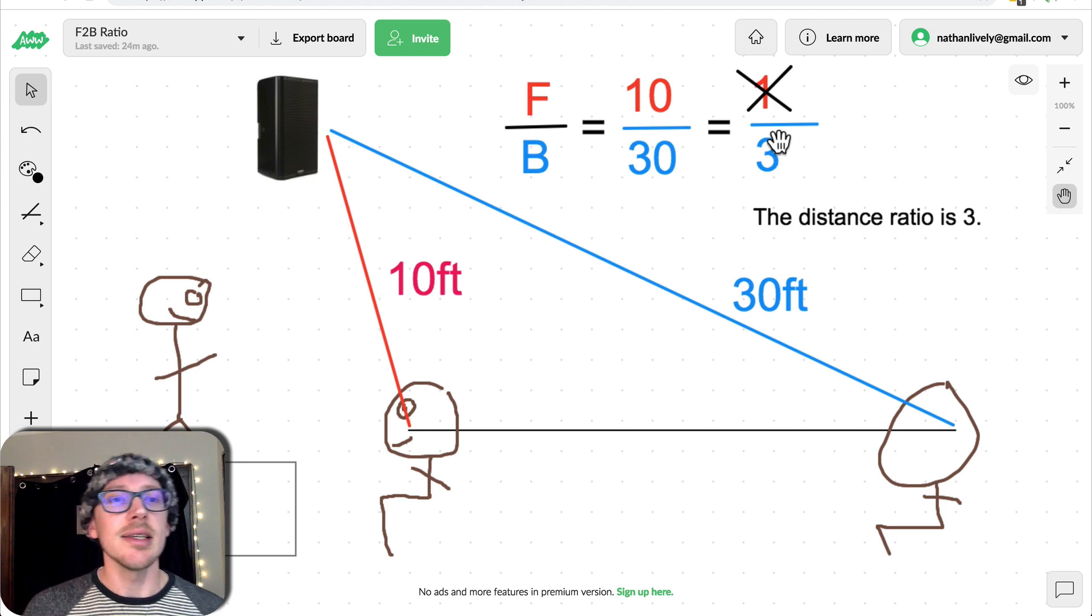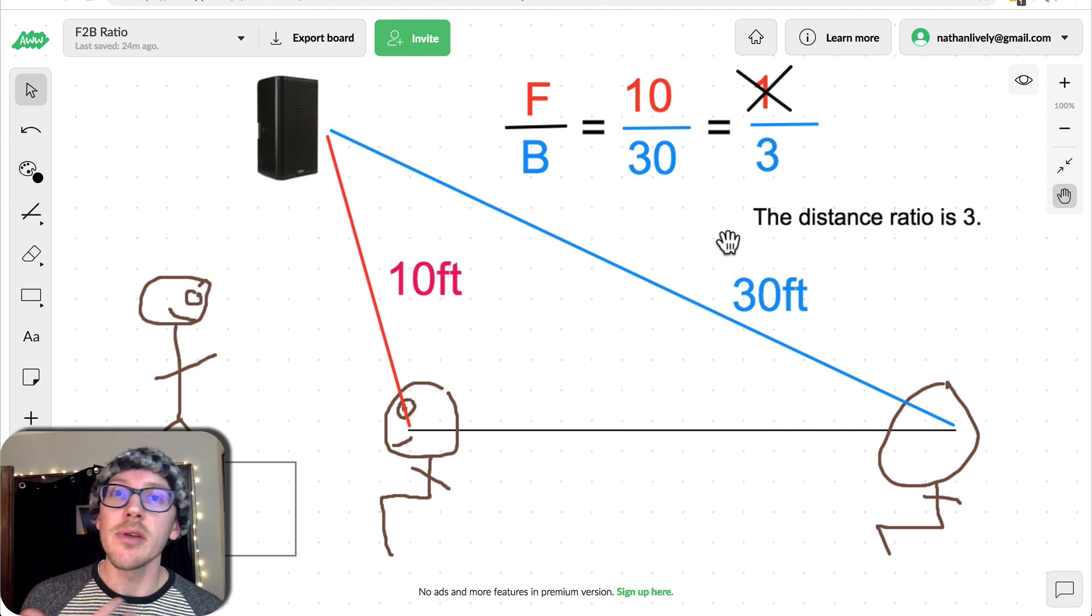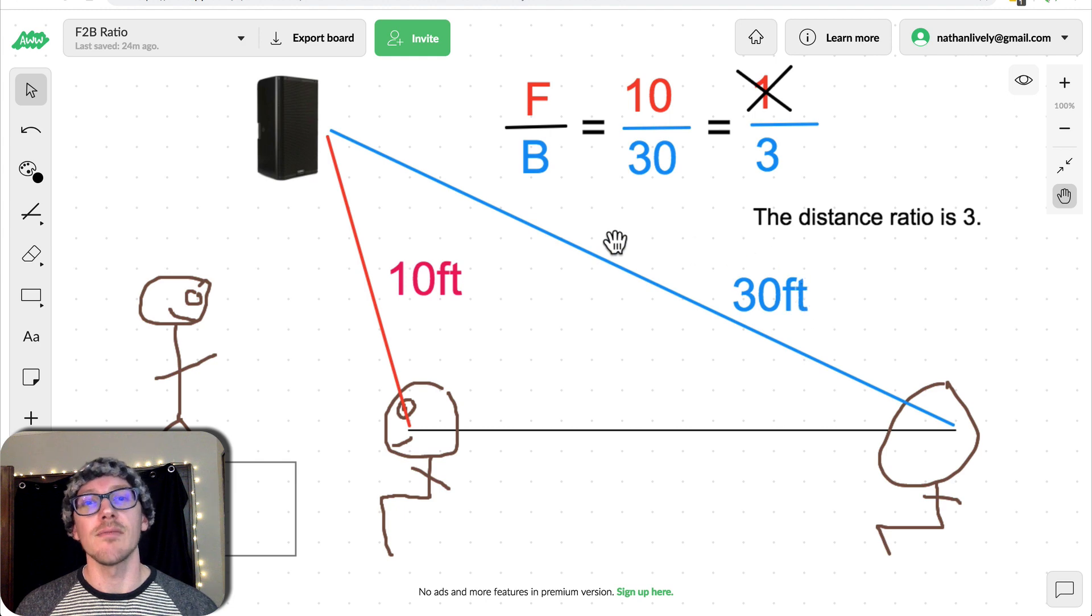So if I say the distance ratio is 3, then it's probably not 3 meters or 3 feet, right? But some multiple of that, 30.